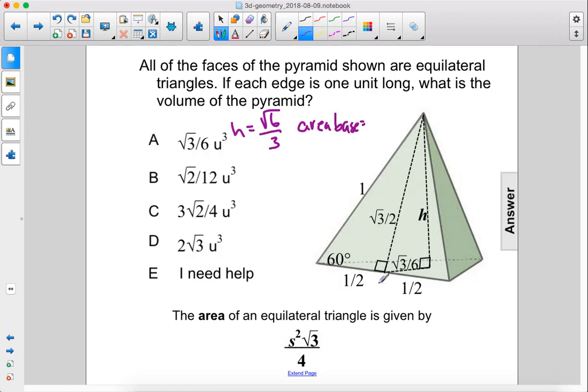That equals s squared times the square root of 3 over 4. Since the base is a triangle, not a square, and the side lengths are 1, we have 1 squared times the square root of 3 over 4, so the area of the base is the square root of 3 over 4.